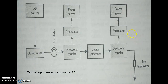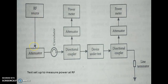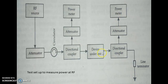A test setup is shown here: we have an RF source, an attenuator, a circulator, a directional coupler, and a device under test. The RF source provides the RF signal; the attenuator makes that signal suitable for the circuit. The circulator acts as an isolator, rejecting any reflections from the devices back towards the source. A directional coupler helps measure the input power to the device, and another directional coupler measures the output power from the device.